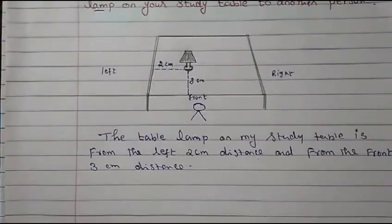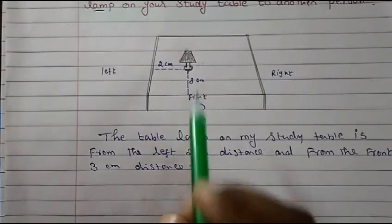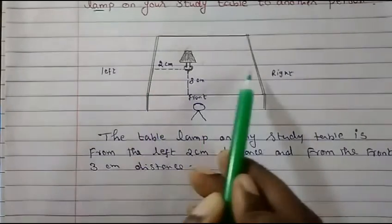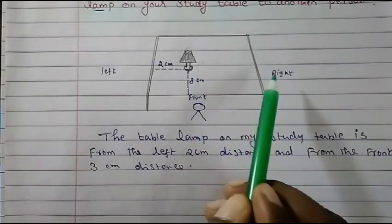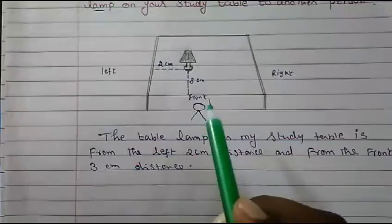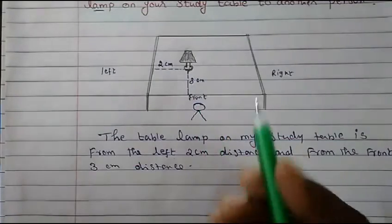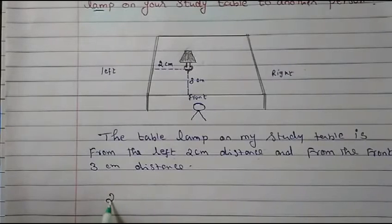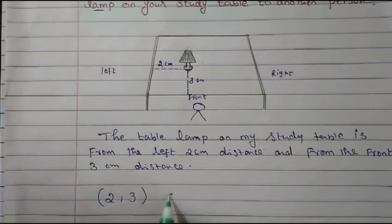If you have to write this according to coordinates, remember: always write the horizontal line distance first, then the vertical line. So it will be written as two comma three in coordinate form.